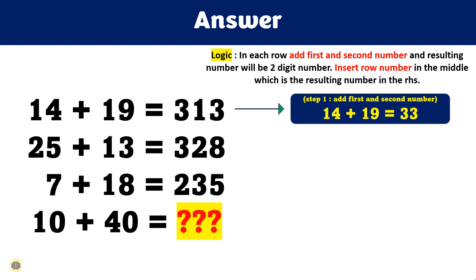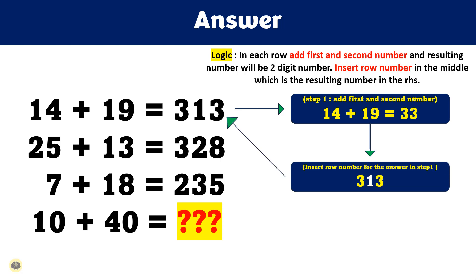Here, addition of two numbers 14 and 19 will result in 33 and one is inserted in middle. Since this is first row, one is inserted between numbers.